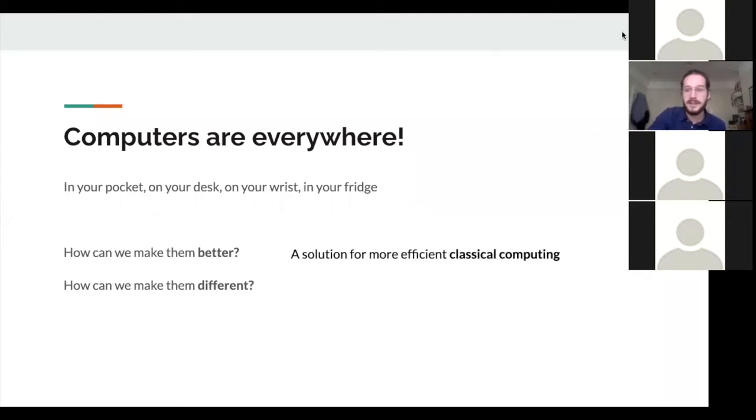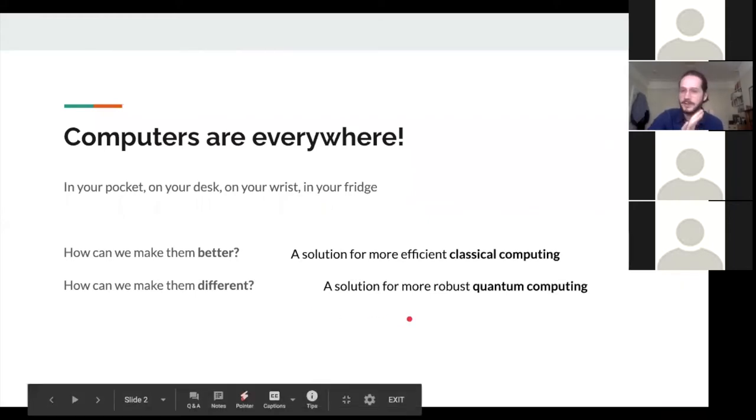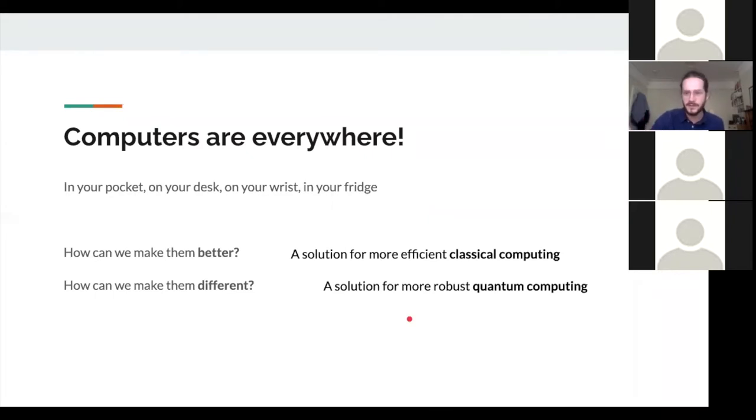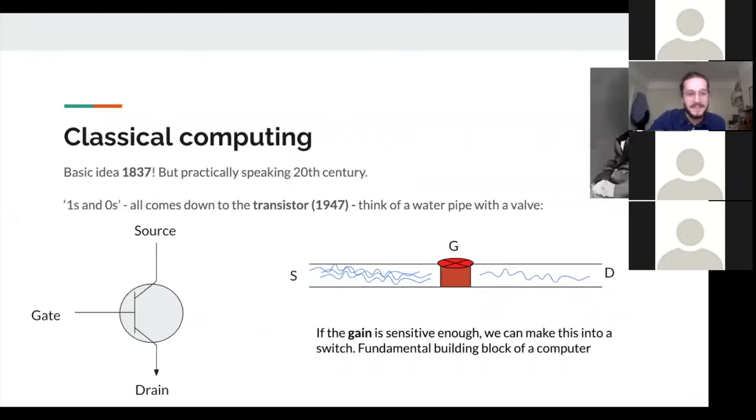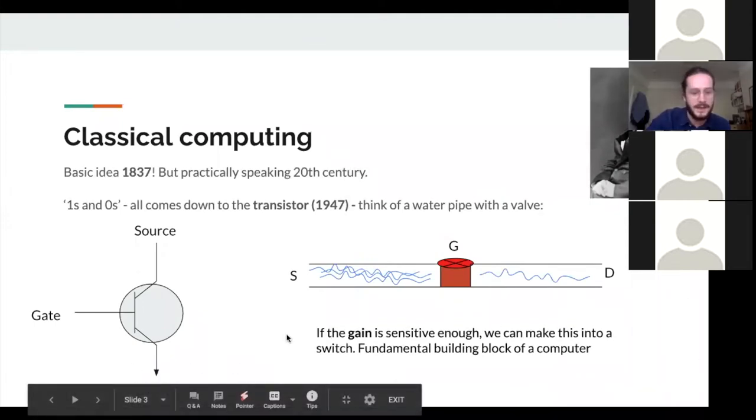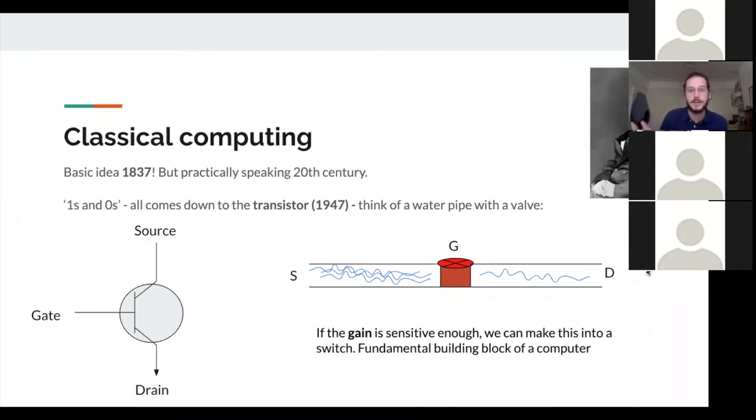So how can we make them better is the first section when we talk about more efficient, perhaps quite interesting ways of doing classical computing. And secondly, this methods for more robust quantum computing. So moving on to the first section, just some of the ideas of classical computing. So the basic idea is really old, it's almost 200 years old, started by Charles Babbage, this guy in the top right corner.